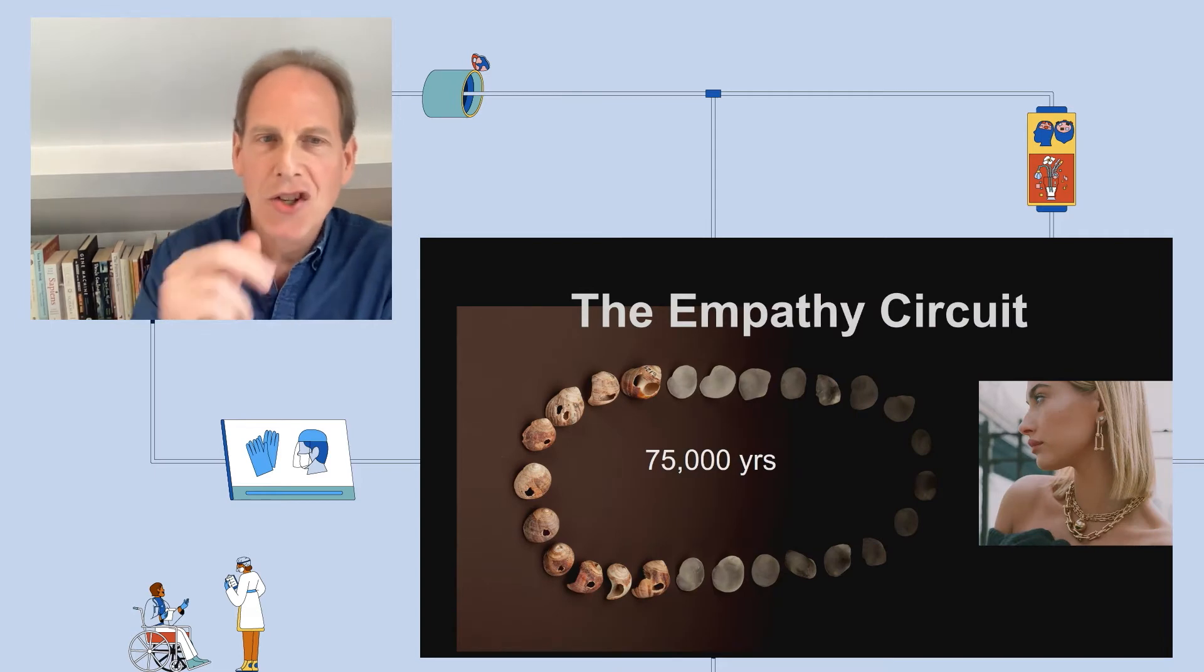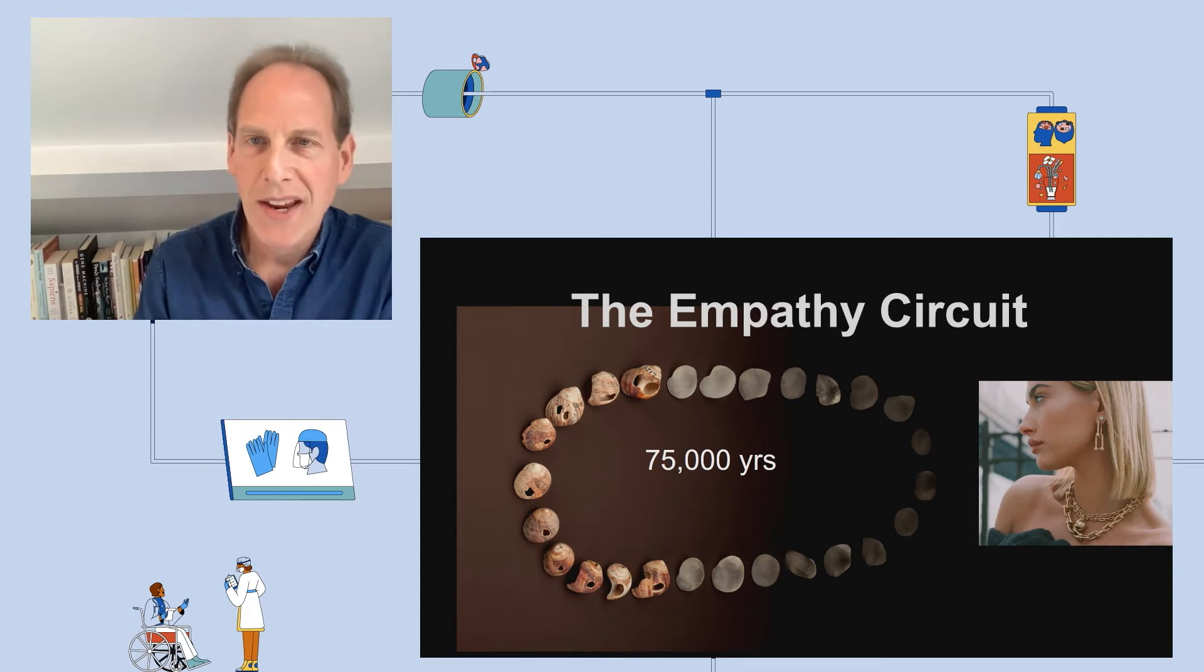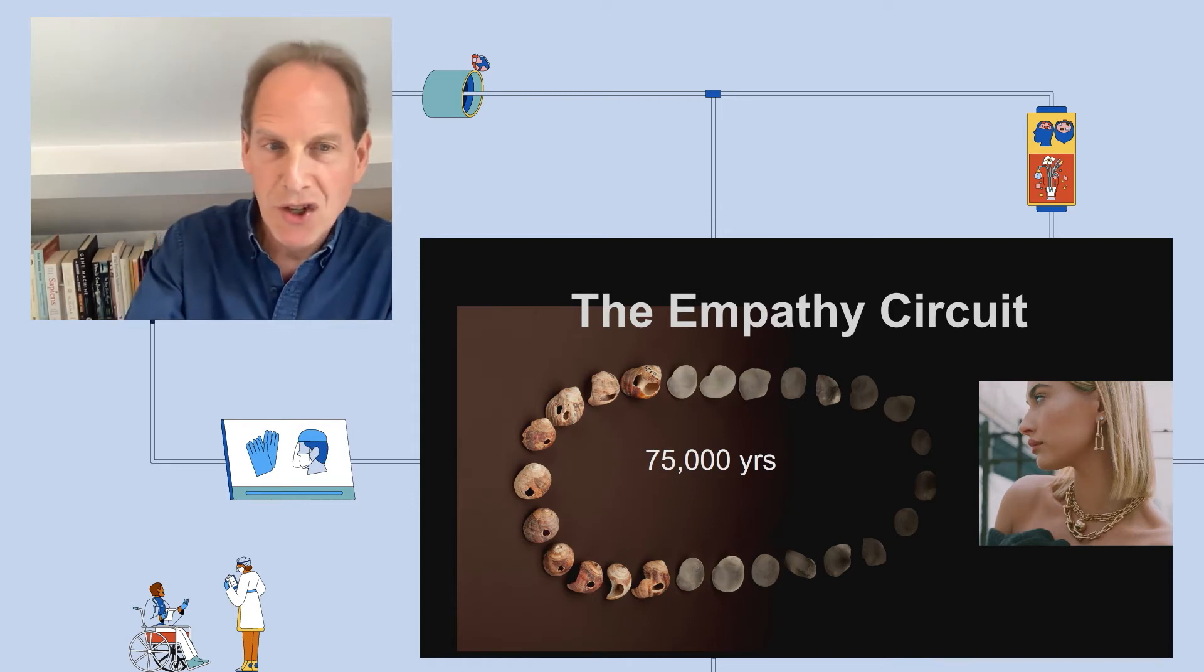But let's go back to the first jewelry, 75,000 years ago, because the systemizing mechanism explains how we were able to make the jewelry. But a different mechanism, the empathy circuit, explains why we made it. We wear jewelry because we can imagine what someone else might think or might feel when they're looking at us. They might think we are beautiful or of high status, or we might make the jewelry as a gift because we can imagine someone else might feel happy. So the evolution of empathy, a different circuit, enabled a whole raft of complex social interactions, including deception and referential communication.